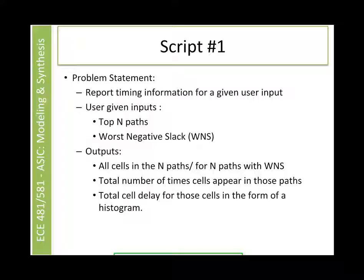Moving on to script 1, the problem states to report the timing information for the user-defined inputs which are the top-end paths and the worst negative slack as given by the user. Our script would be generating the outputs as the total number of cells and generating a histogram and also a bar to display the total number of times the cell appeared in those paths.